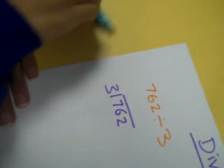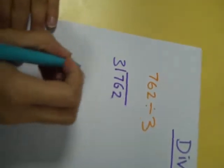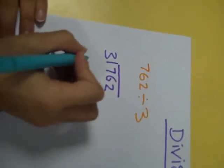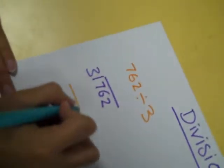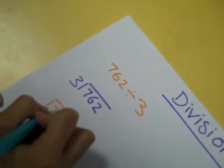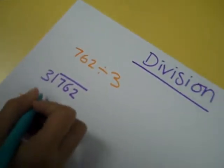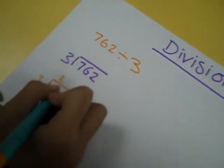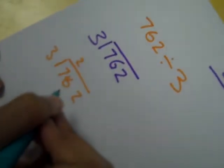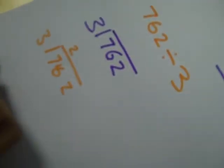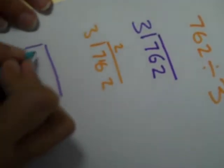You work out how many times 3 goes into 7. 3 goes into 7 two times and there is a remainder of 1, so you carry it to the next number, which is 6. There was a remainder of 1, so the number 6 has now changed into the number 16.